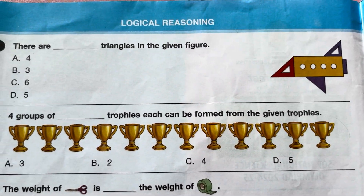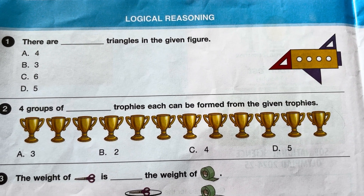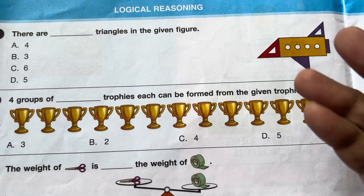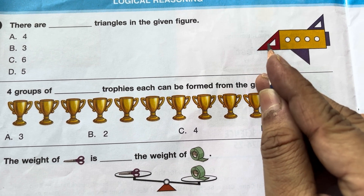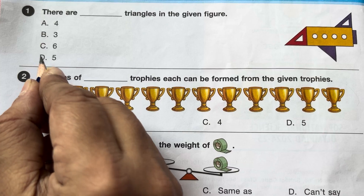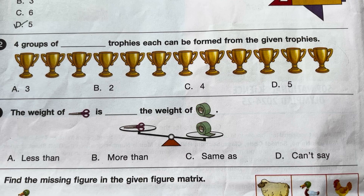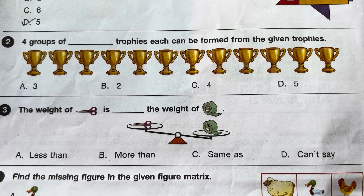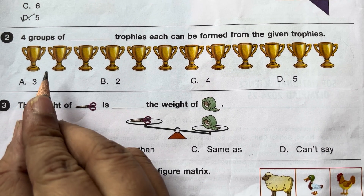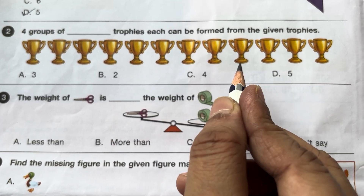Logical reasoning question: There are how many triangles in the given picture? You can see 1, 2, 3, 4, 5 — there are 5 triangles in the given picture, so the answer is D: 5. Next question: How many groups of 4 trophies each can be formed from the given trophies? There are 1, 2, 3, 4, 5, 6, 7, 8, 9, 10...